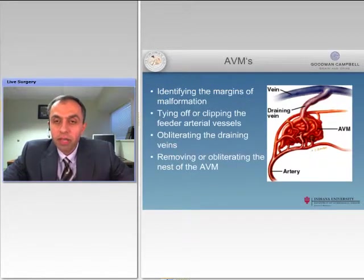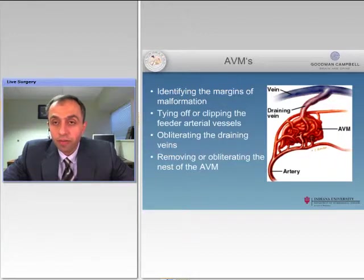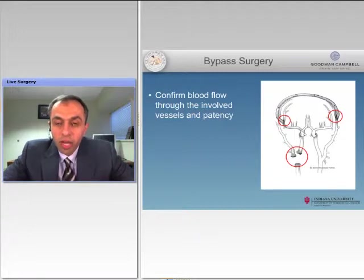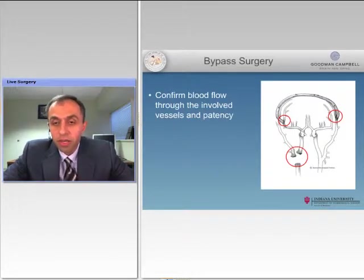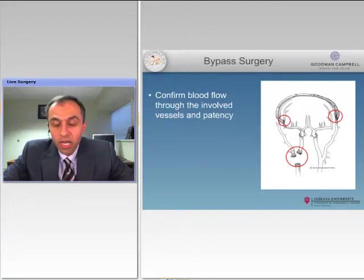For AVMs, it's very simple: if you inject the dye and you don't see the dye around the resection cavity, the AVM is gone. That's a good application for ICG in terms of AVMs. For bypass surgery, if you see good dye going through the vessels and the bypass graft, that means your graft is patent — and it's immediate. It can give you really immediate feedback without waiting for an intraoperative angiography.